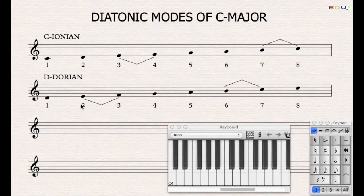The Dorian scale has the semitones between tone 2 and 3 and 6 and 7.